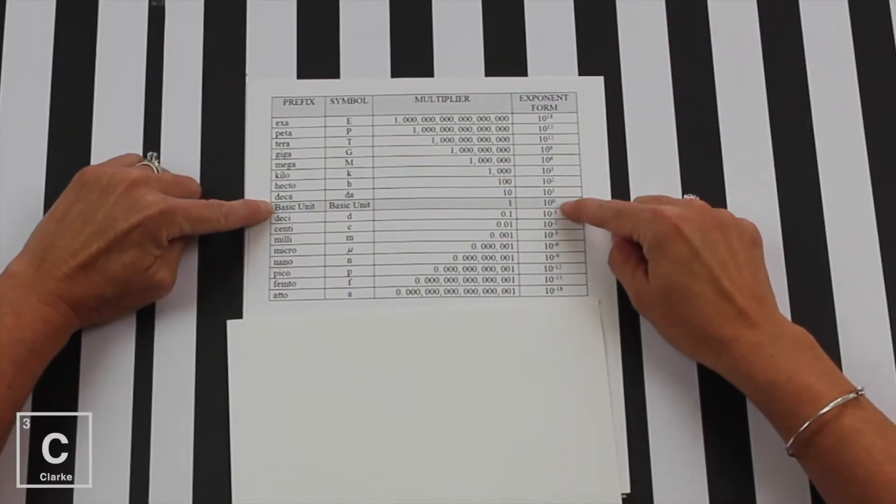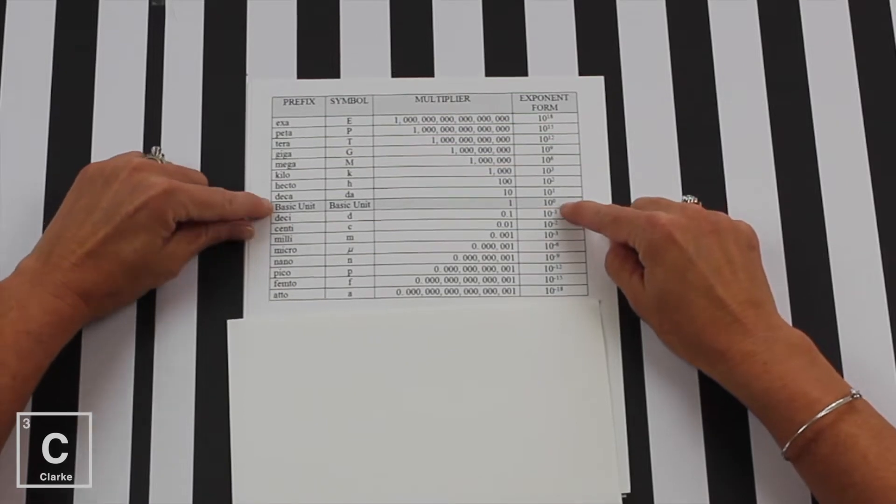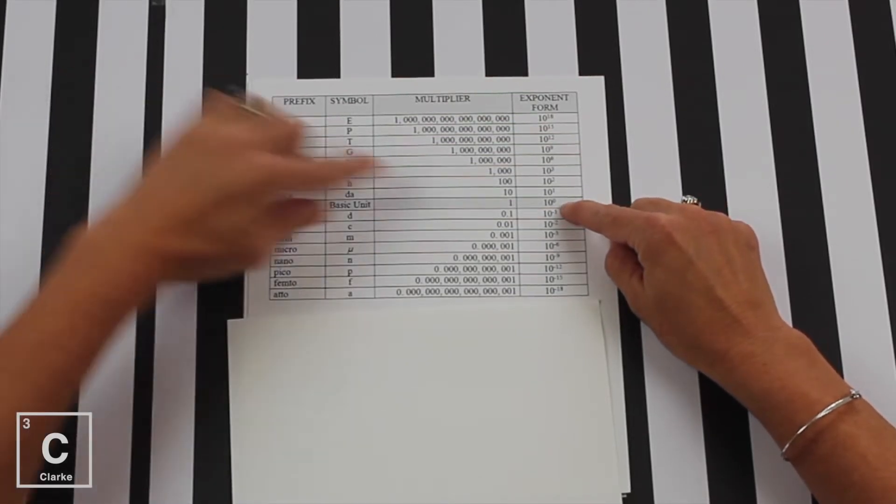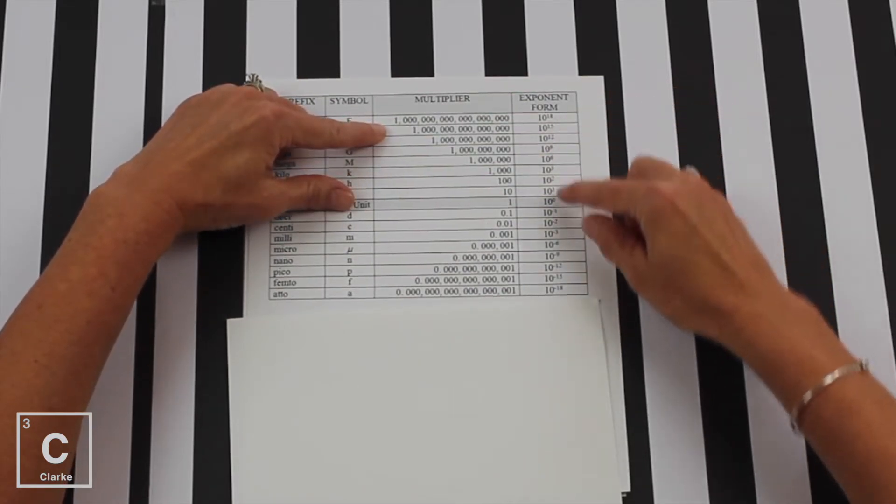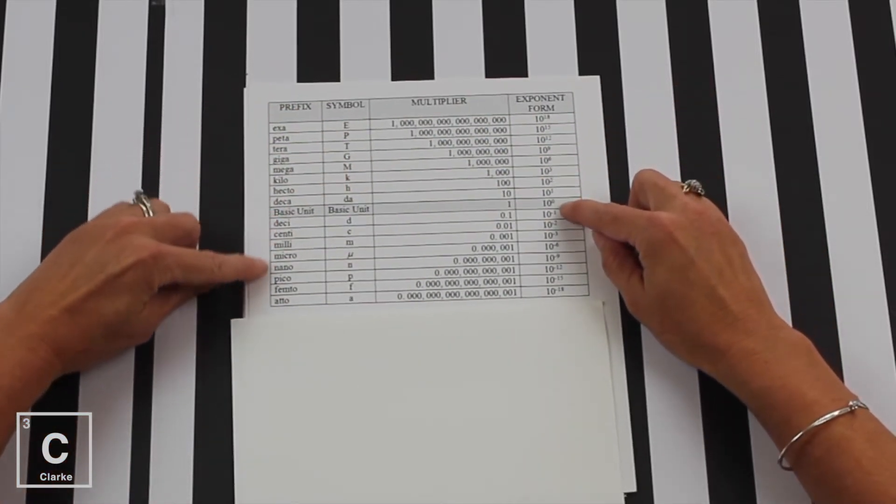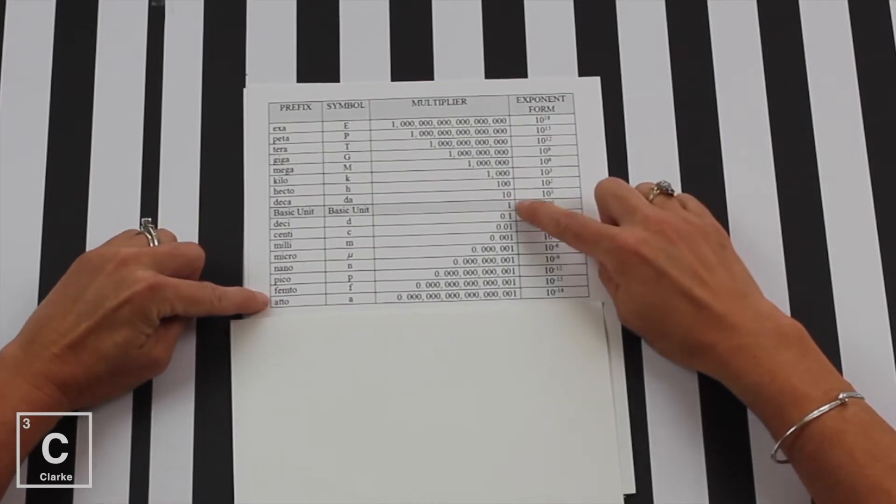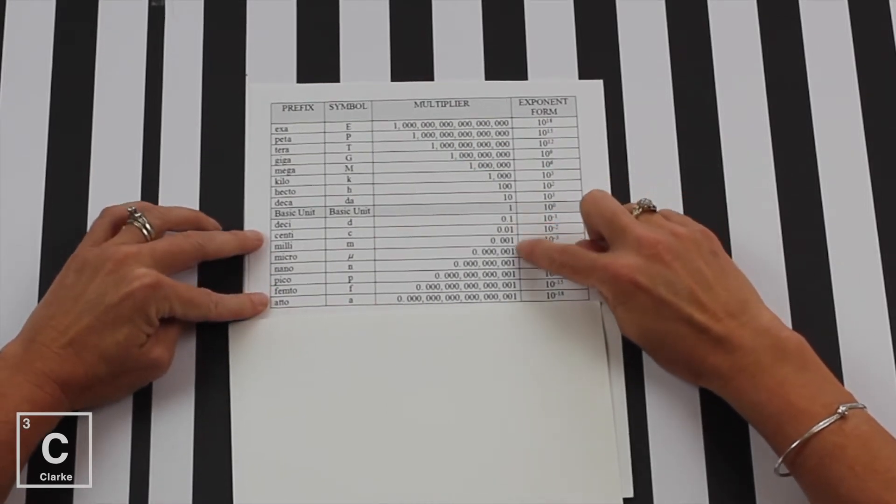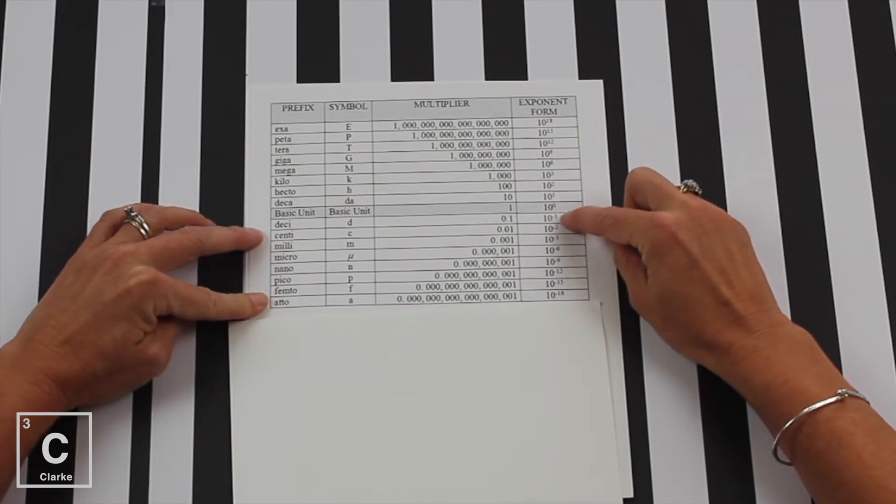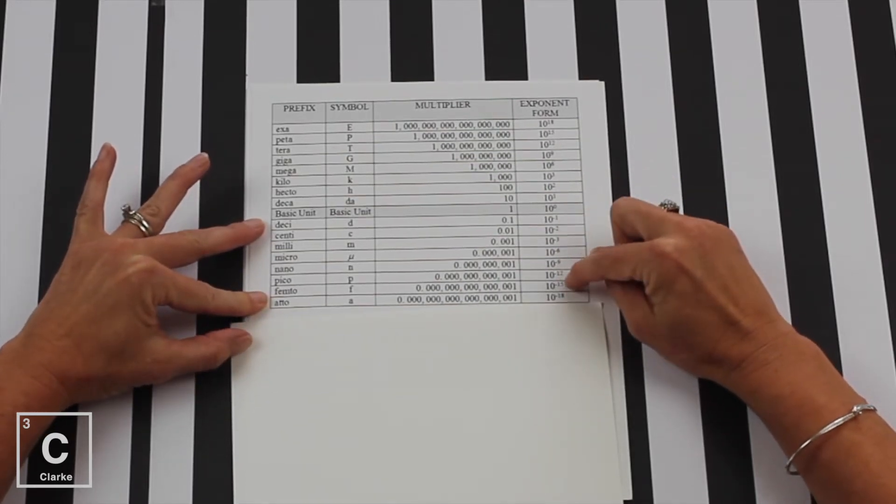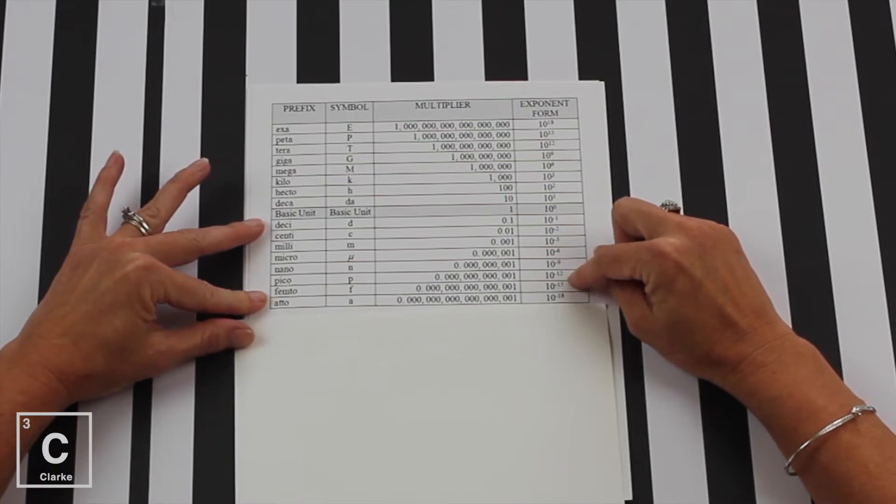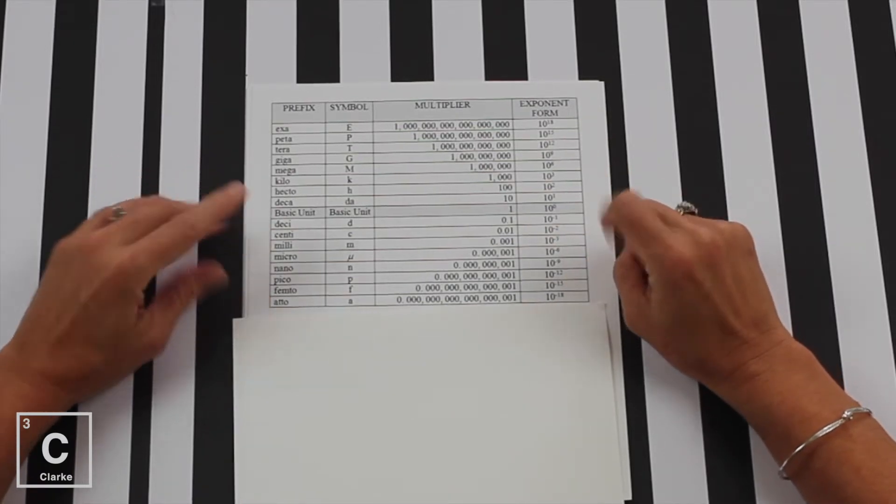But here, let's pay attention to this zero. Now, all of these prefixes above, they're bigger than one and they've got these giant exponents. And then all of these below the base unit, these are smaller than one or decimals. And if we notice, we've got these negative exponents. All of this over here is written in scientific notation, and we're going to talk about scientific notation in a different video.